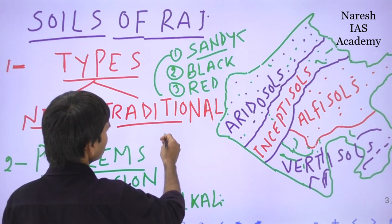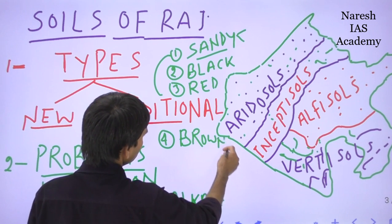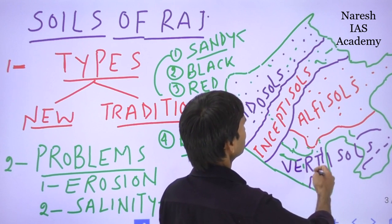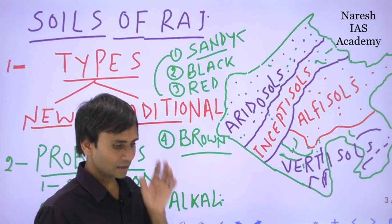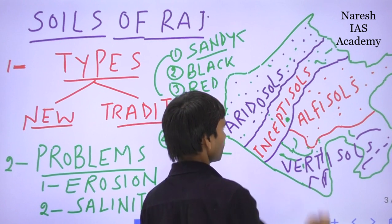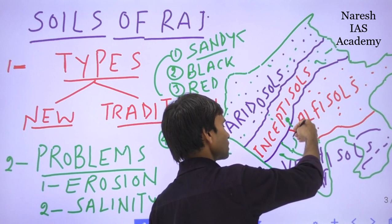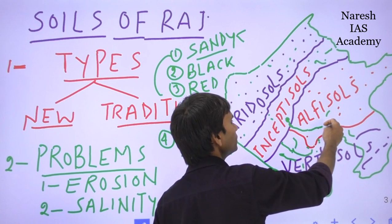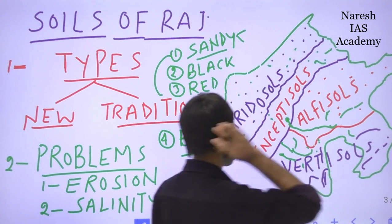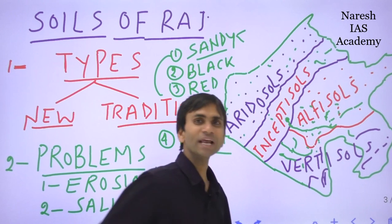The next traditional classification is brown soil. Brown soil in Rajasthan is mainly found in the basin area of the Banas river. The Banas river originates in the Khamnor region of the Rajsamand district, and flows through Rajsamand, Udaipur, Bhilwara, Tonk, and Sawai Madhopur. The drainage or basin area of the Banas river covers the brown soil in Rajasthan.